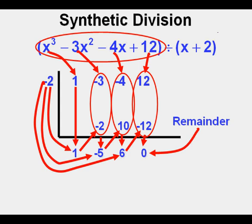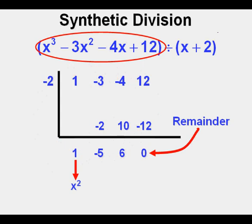Finally, we use these numbers calculated to bring down our answer. The 1 means 1x squared or x squared. The negative 5 here means minus 5x. The 6 comes down to the numbers place as plus 6.